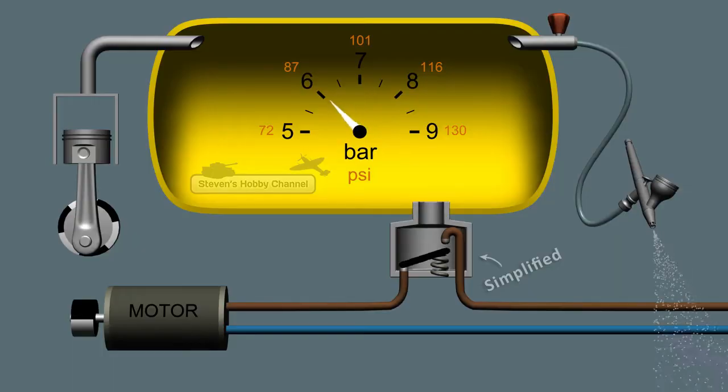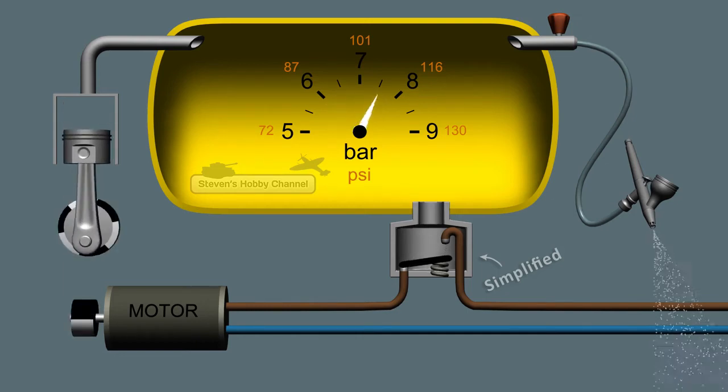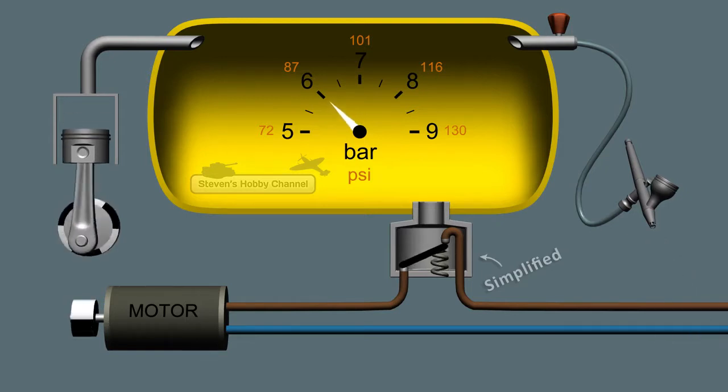If the air pressure inside the tank drops to 6 bar, the contact will close and the motor will run. If the pressure reaches 8 bar, the contact opens and the motor will shut off.